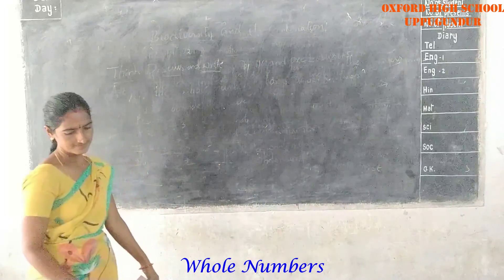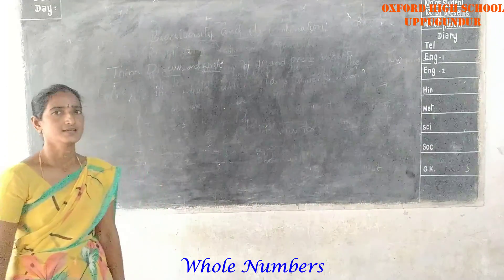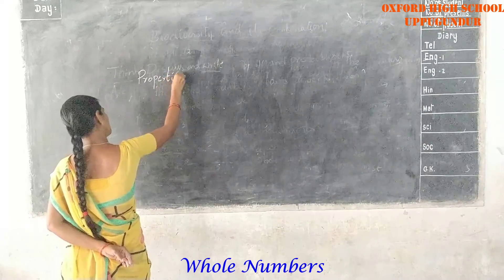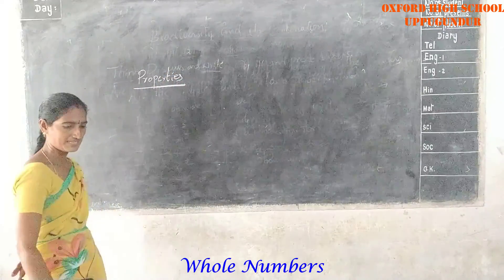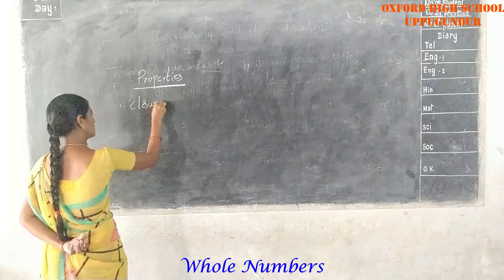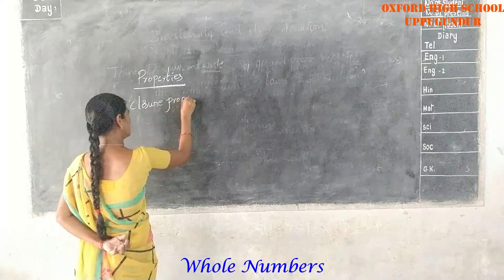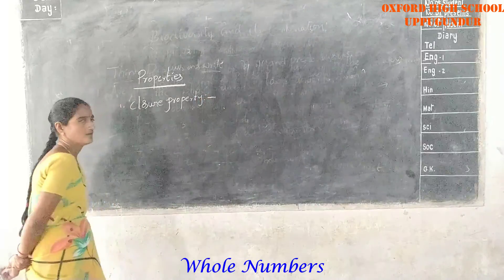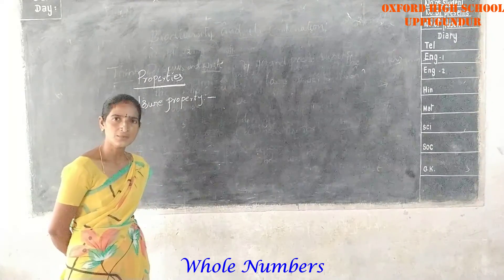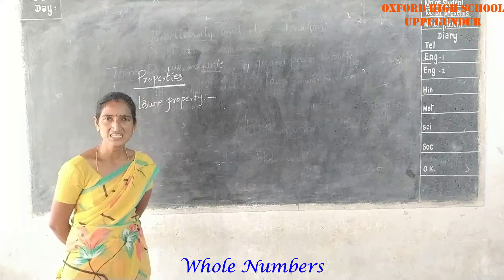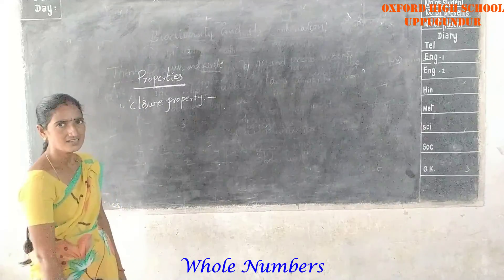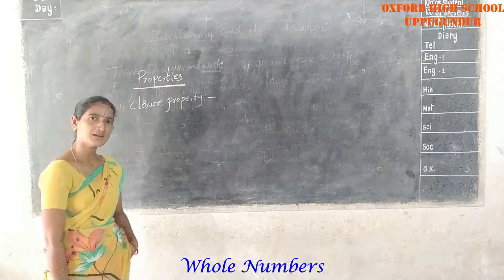When we understand these examples, we learn the properties of whole numbers. First, closure property. Closure property applies under addition, subtraction, multiplication, and division.